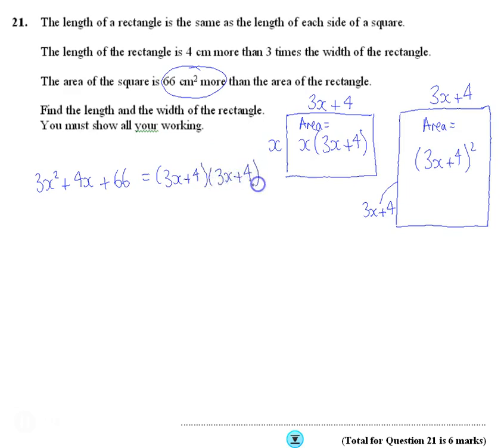So I've made an expression now. So I'm going to multiply the right-hand side. So I get 3x squared plus 4x plus 66 over here. On this side, I'm going to get 9x squared. Then I'm going to get a 12x and a 12x. So together that's 24x. And then a 4 and a 4 is 16.